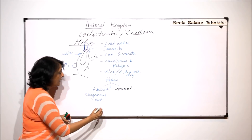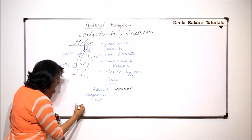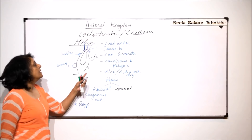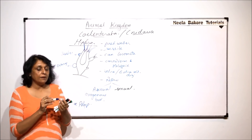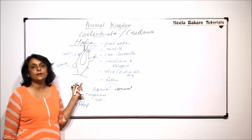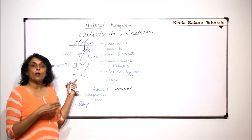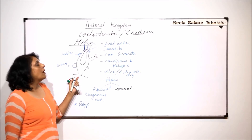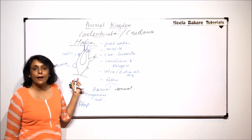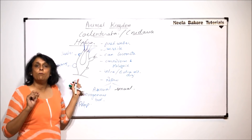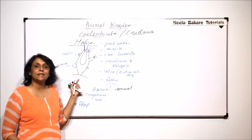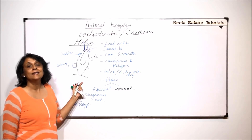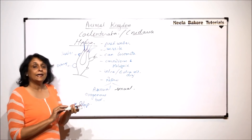In the case of Hydra, we find only the polyp form — that is, this type of body. We have seen when talking about general characters that cnidarians show polyp form as well as medusa form. Hydra is one example where only the polyp is seen. We will take some examples where both polyps and medusa are seen in the life cycle.